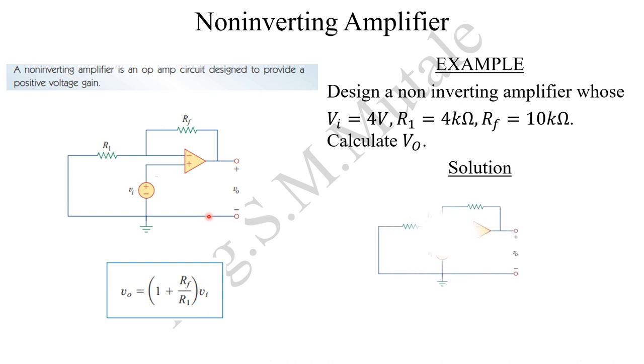That is the design for the non-inverting amplifier and then we put in the parameters there. We put in the input voltage which is 4 volts, the R1 which is 4 kilo ohms, and the feedback resistor which is 10 kilo ohms.